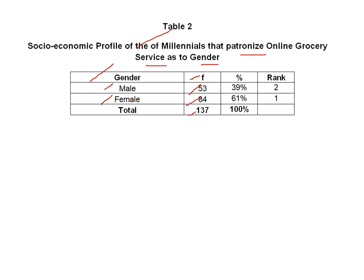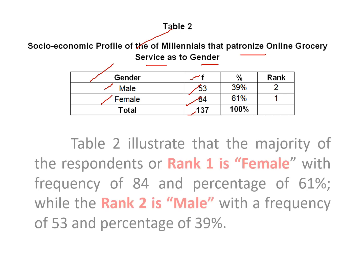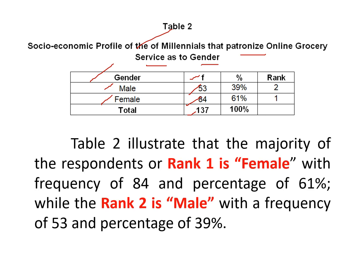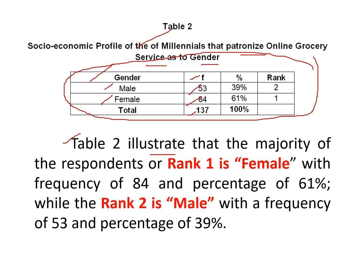To create analysis for this table, the first thing you should have is the first paragraph, which focuses on the table itself. For example: Table 2 illustrates that the majority of the respondents, rank 1, is female with a frequency of 84 and percentage of 61, while rank 2 is male with a frequency of 53 and percentage of 39.